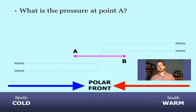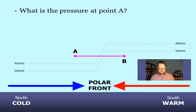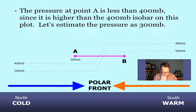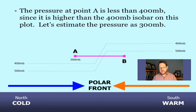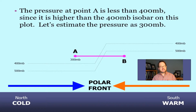Let's come up with a ballpark estimate of what the pressure should be. Notice that A and B are the same number of meters above the ground, but they don't necessarily have the same pressure. At point A, on the cold side, that point is farther above the ground than the 400 millibar surface is. Since pressure always decreases with height, the pressure at A has to be less than 400 millibars. For this thought problem, let's say it's 300 millibars.